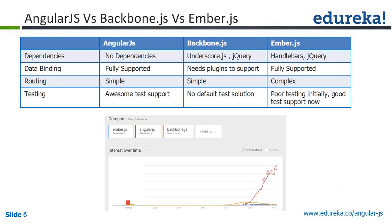Whenever we need to build a web application, we can't build everything from scratch. We need some custom components — for example, drag-and-drop containers. Instead of writing code from scratch, we take whatever module is available in the market, include it in the application, and if more modules are available in AngularJS, it helps developers build applications faster.